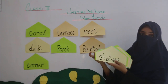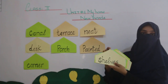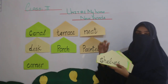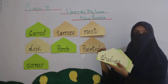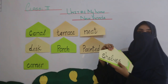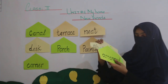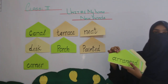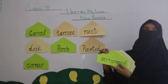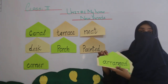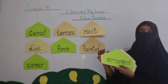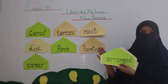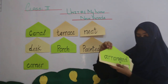Another word is Shelves. Aap sabko pata hoga ki shelves kya hote hain — aapki cupboards mein different sections mein divide kiye gaye hote hain. Another word is Arrange, A-R-R-A-N-G-E-D. Arrange means kisi bhi cheez ko sahi se ek taraf rakhna, proper organize karna.